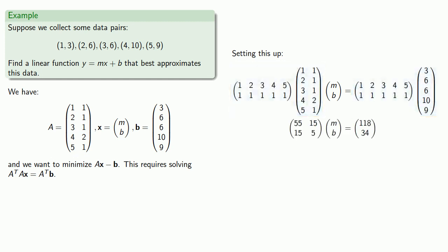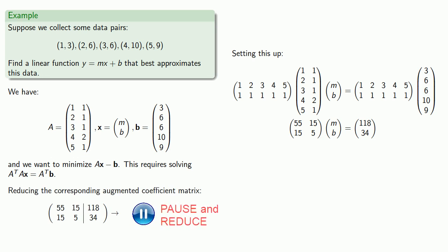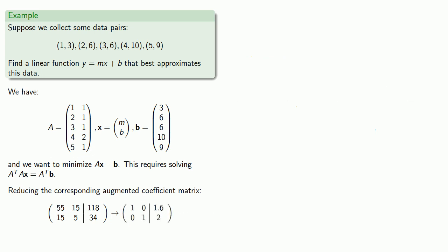And now this is a beautiful system of two equations in two unknowns. And so reducing the corresponding augmented coefficient matrix gives us our solution, m equals 1.6, b equals 2, and the best fit line is y equals 1.6x plus 2.